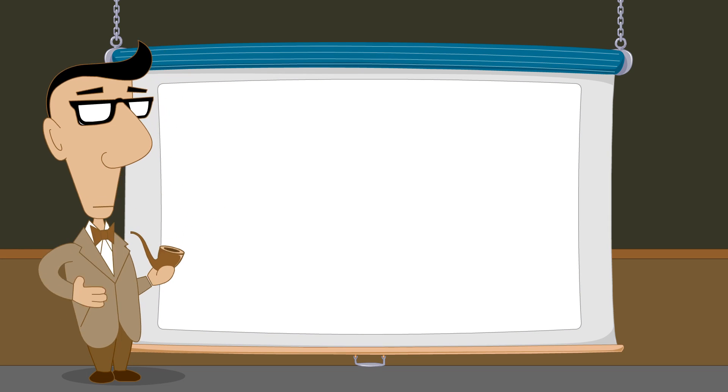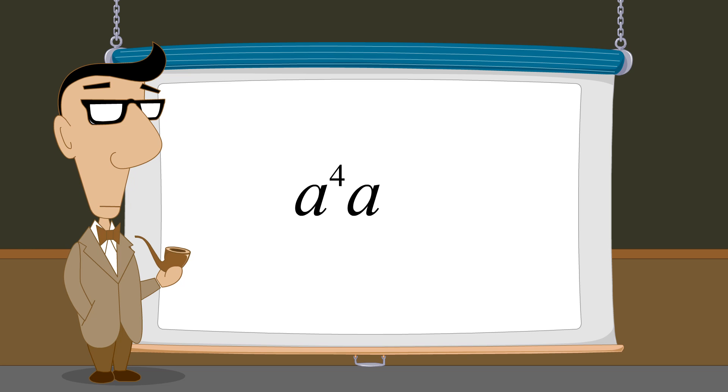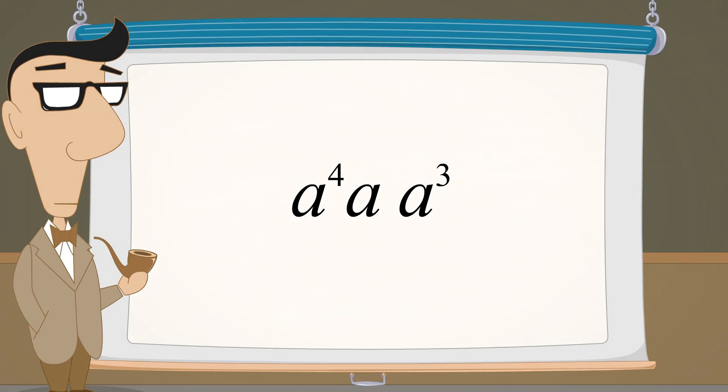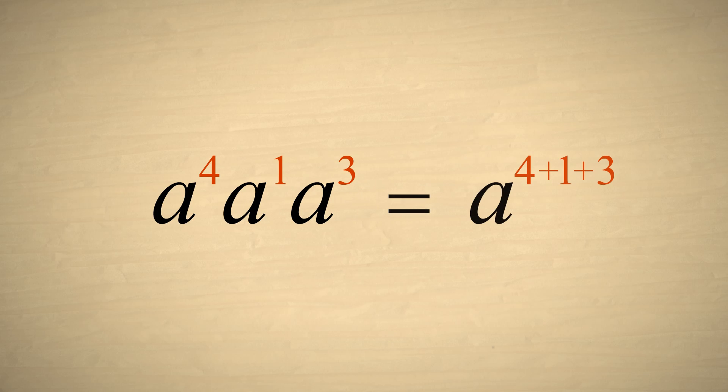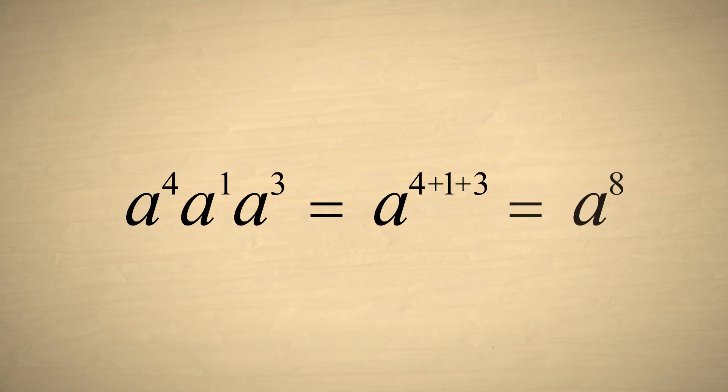Now let's simplify an expression with three terms. Remember that it doesn't matter what letter is used for a variable. There is no difference between using an a, or an x, or any other letter. We start by writing the a without an exponent as a to the first power so we can add the exponents. And adding the exponents, we get a to the eighth power.